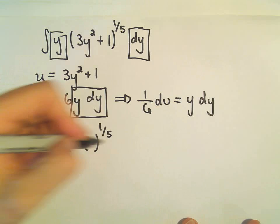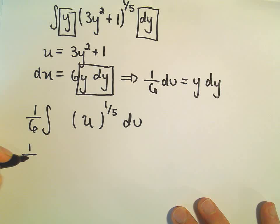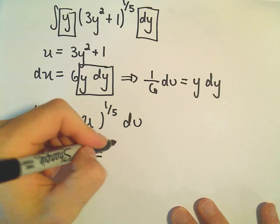So we could write this a little more compactly. 1 over 6, the integral of u to the one-fifth. And now when we integrate, so now we're in a position, we just have a variable to a power.